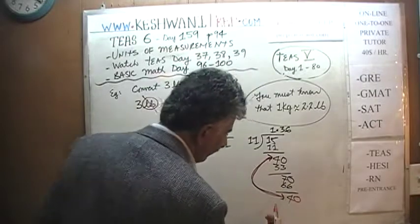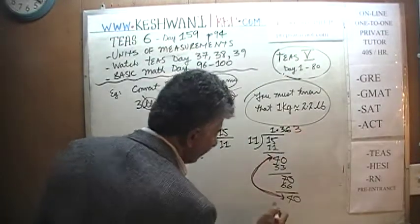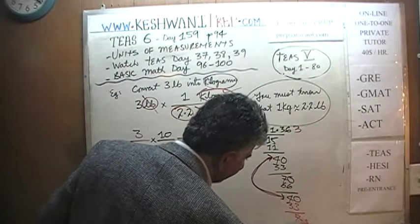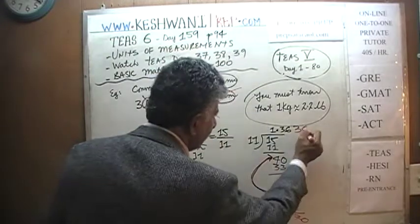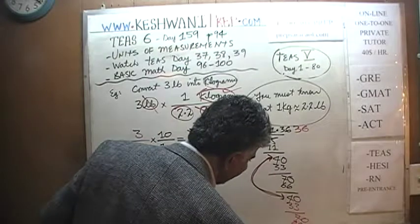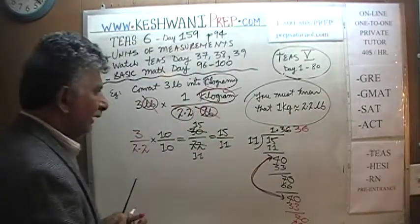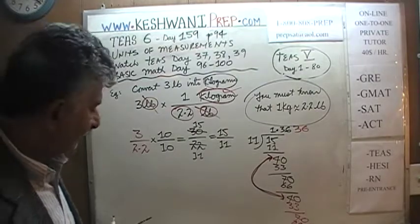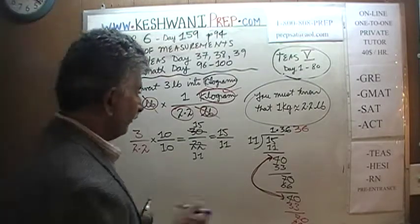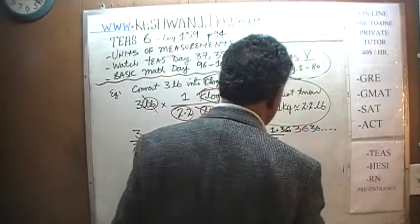4 becomes 40, which has three 11s — 3 times 11 is 33, remainder 7. Stick a zero — 70 has six 11s, 6 times 11 is 66, remainder 4. It goes on forever: 1.363636363636... Where does it end? It never ends — it just continues as 363636 repeating.